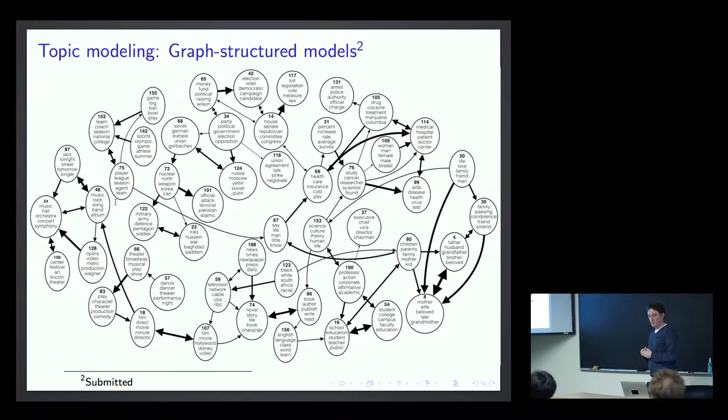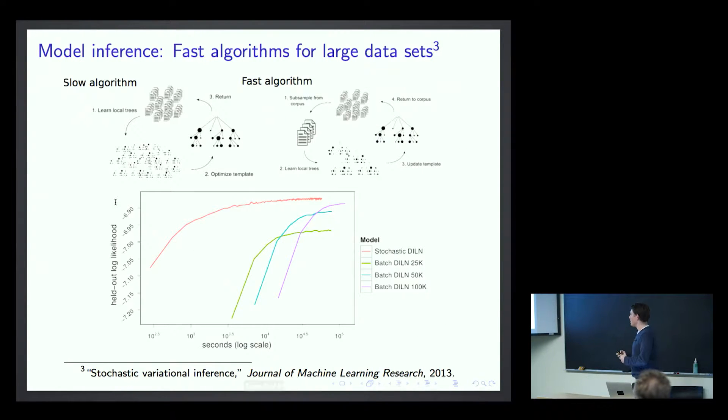Okay, so the reason why we can learn these very structured models is because we have so much data that we can kind of get everything out of the data. But with more data, it means that we have to have a more efficient algorithm. So on the model inference side, I've worked on scalable algorithms for learning these models. So this is kind of the general idea. You have tons of documents. You want to learn something about each document to update the global topics. Well, instead, just subsample randomly, learn just about that, and then update with a stochastic step. So the idea is very simple, but it's very generalizable to many different types of models.